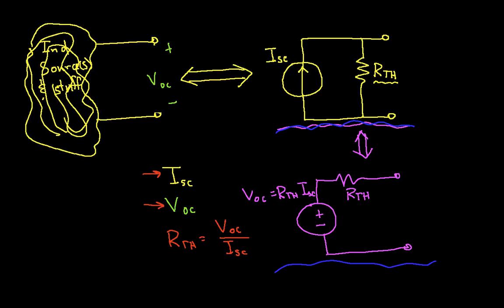So that's a useful thing to know. Again, the process of finding a Norton equivalent circuit is exactly the same as finding the Thevenin equivalent circuit, except that at the end, you draw something that looks like this rather than something that looks like this.